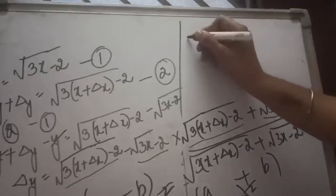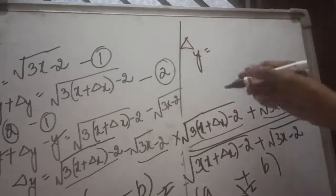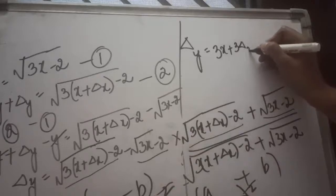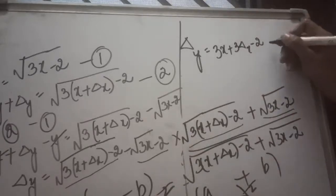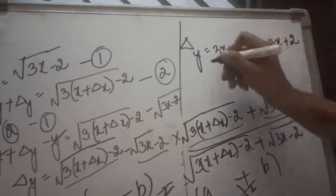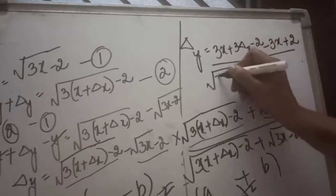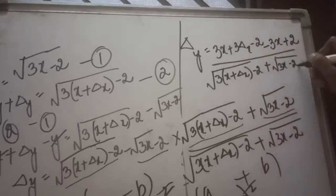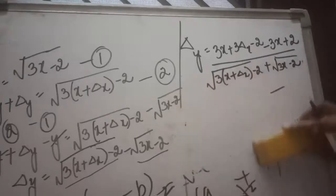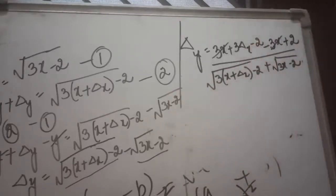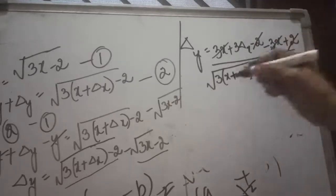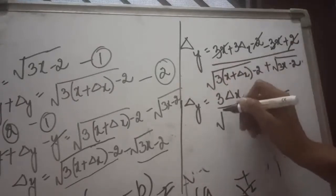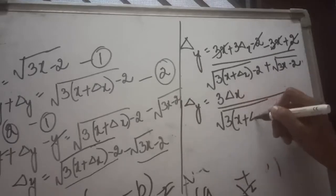So delta y equals: opening the bracket in the numerator gives 3x + 3·delta x - 2 minus 3x + 2, all divided by the denominator root(3x + delta x - 2) plus root(3x - 2). The 3x and -3x cancel, and +2 and -2 cancel, leaving delta y = 3·delta x divided by root(3x + delta x - 2) plus root(3x - 2).